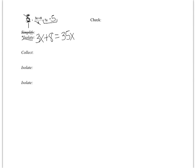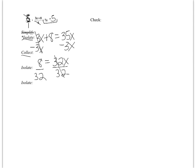Now I collect. It doesn't make sense to move 35x because that would leave 0 on that side, so it makes more sense to move the 3x. Whenever you move something from one side of the equal sign to the other, you cancel it out — so I subtract 3x from both sides. I always want you to get your variables to one side before adding and subtracting constants. That gives me 8 = 32x. Then I divide both sides by 32, and my answer is the fraction 8/32.